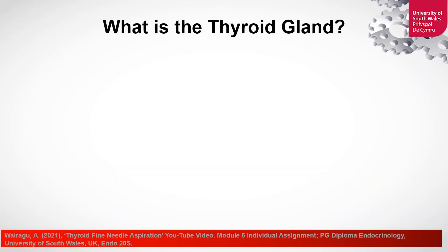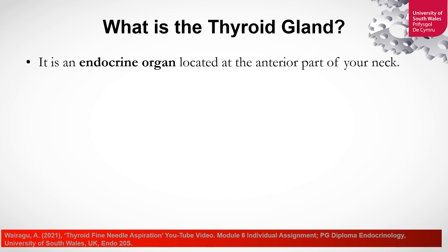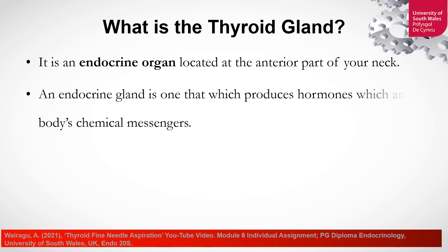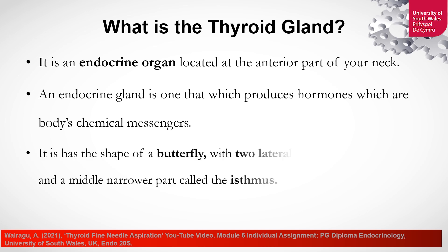What is a thyroid gland? It is an endocrine gland located at the anterior part of your neck. An endocrine gland is one which produces hormones, which are the body's chemical messengers. It has the shape of a butterfly with two lateral lobes, the right and the left, and the middle narrower part called the isthmus.